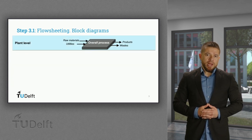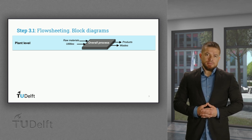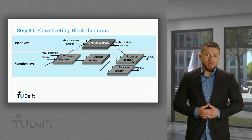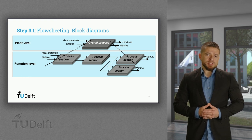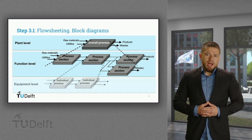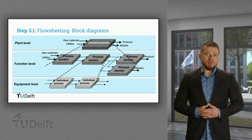For block diagrams, we can look at the process first from an overall perspective. This is called the plant level, where the whole system is a black box and raw materials and utilities go into the system and products and waste streams come out. Then we can open up the black box to identify the different processing sections where significant changes occur and their interconnections through material and utility streams. This is the function level. Finally, we can zoom in again in each section to identify the different individual process units. This is called the equipment level.